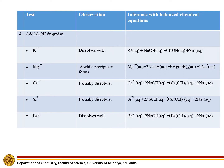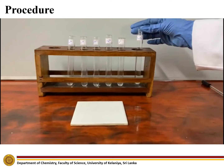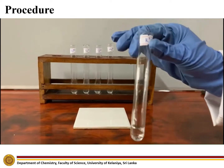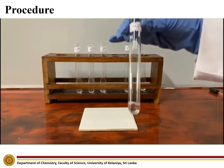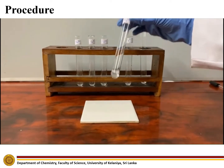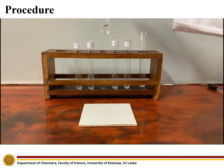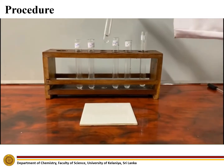In the next part of the experiment, when we add sodium hydroxide dropwise, only potassium and barium ion dissolves well. But magnesium will give a white color precipitate, which is magnesium hydroxide. Calcium and strontium partially dissolve in sodium hydroxide solution.